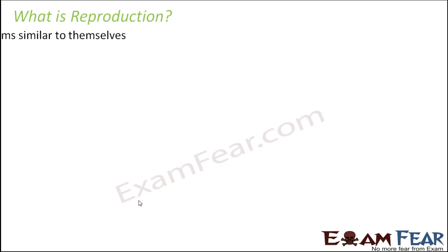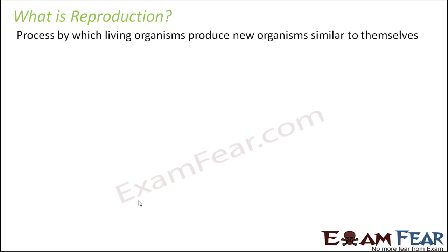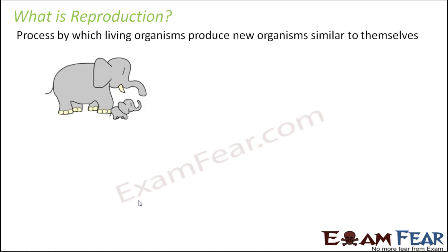So what exactly is reproduction? It is a process by which living organisms produce new organisms similar to themselves. For example, think of an elephant — what kind of new organisms would an elephant produce? The baby of an elephant would always be a baby elephant. Obviously an elephant will not give birth to a human baby. So basically every organism will produce new organisms which will be similar to themselves.